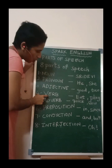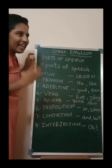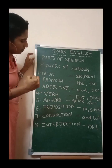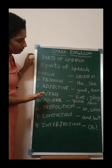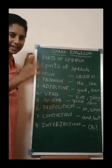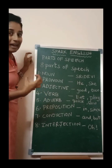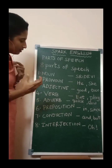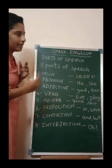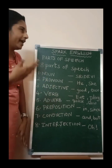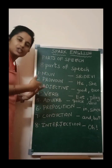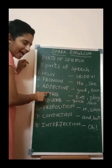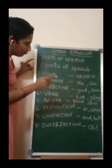Next, verb. Any action word is a verb. In Telugu we say 'kriya' — that is a verb. For example: eat, play, run, jump — everything. Action words are verbs.